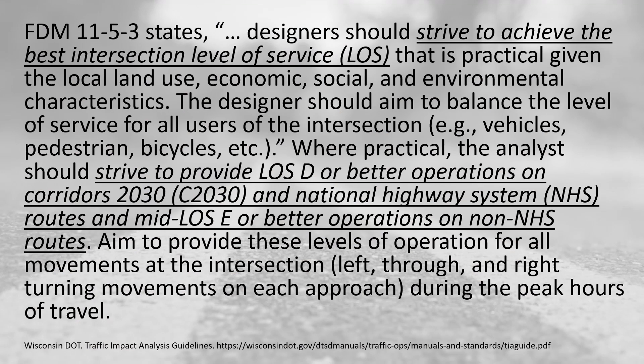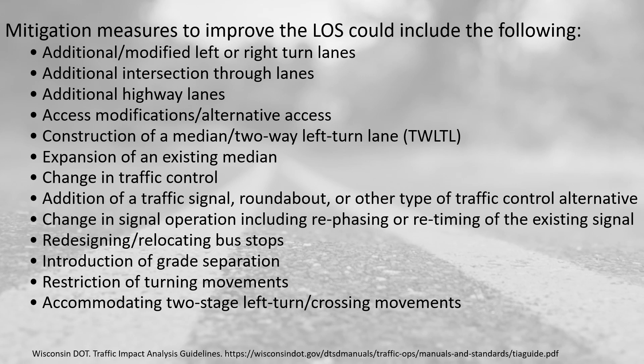This is from a state policy where the goal is to achieve the best intersection level of service (LOS), and when practical, strive to provide a level of service D or better on corridors in the 2030 time horizon on the National Highway System, and level of service E or better on non-National Highway System routes. They also provide specific mitigation measures, including additional or modifications to left and right turn lanes, which is a very common aspect of a project.